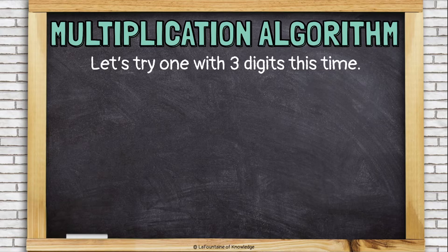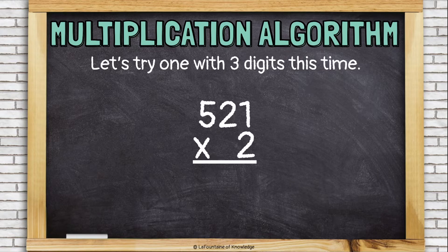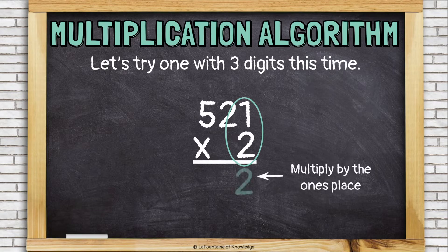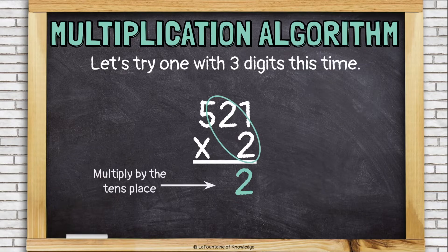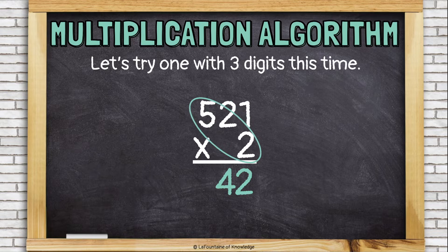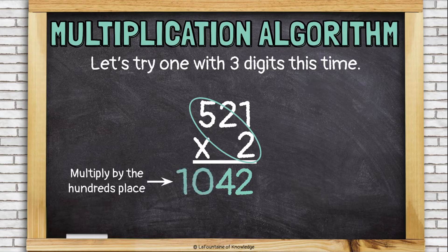Let's try one with a three-digit number. 521 times 2. So first, we're going to multiply the ones places together. 2 times 1, which is 2. Then we're going to multiply our 2 times the tens place, the 2 in the number 521. 2 times 2 is 4. And then we're going to multiply that 2 by the hundreds place. 2 times 5 is 10. And then add a comma to make that answer look a little better. So 521 times 2 is 1,042. I just multiplied the ones place by the ones place, the ones place by the tens place, the ones place by the hundreds place.